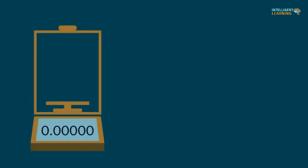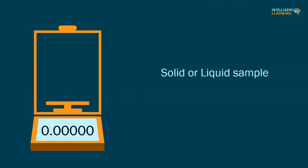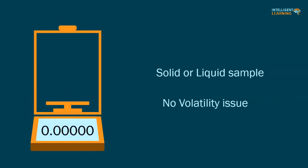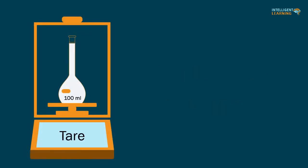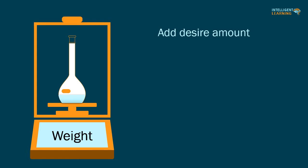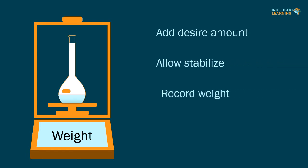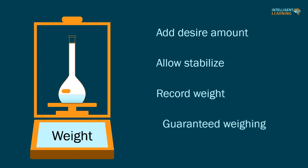Addition weighing is typically used for solid samples or liquid samples for which volatility is not an issue. The receiver is placed on the balance. After the balance display stabilizes, the analyst should tare the balance. Add the desired amount of material to the receiver, allow the display to stabilize, and record the weight.